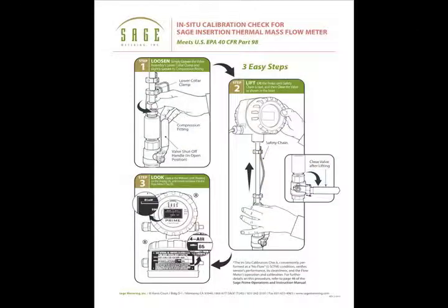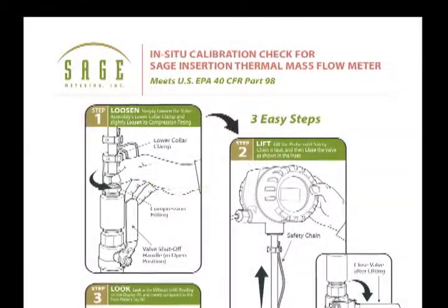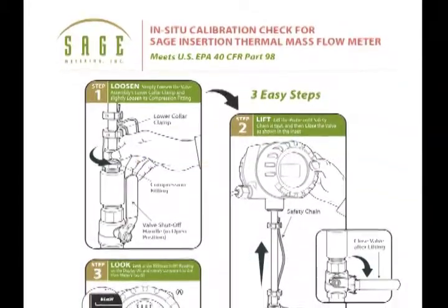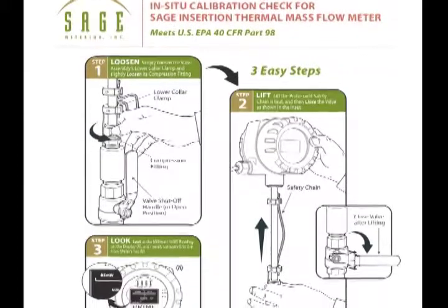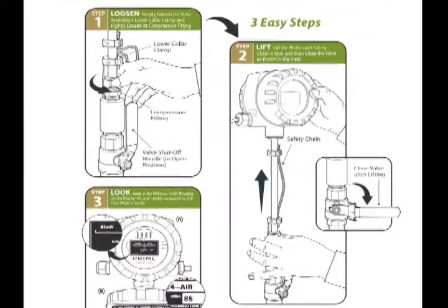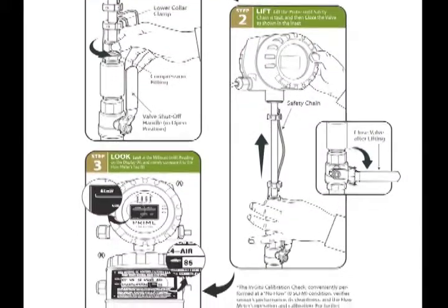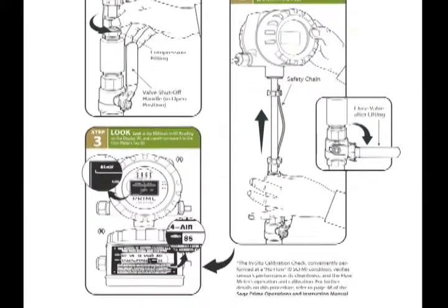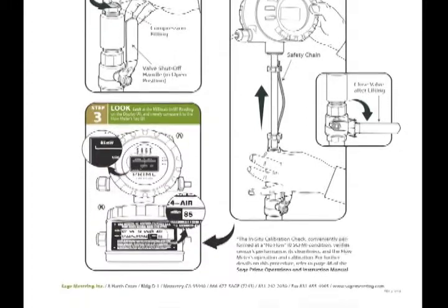Perhaps our most notable contribution to the industry was the introduction over five years ago of the in-situ calibration check, which eliminates the cost and inconvenience of periodic factory recalibrations. This three-minute check at a no-flow condition is reliable, regardless of the test gas temperature, and assures that your sensor is clean and that the flow meter hasn't drifted, shifted, or changed since its initial NIST traceable factory calibration.